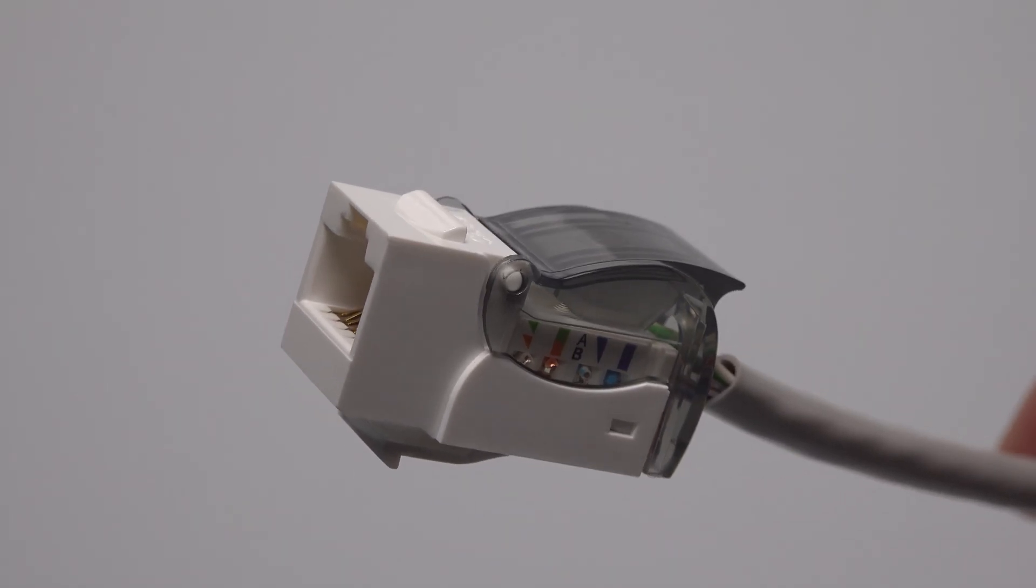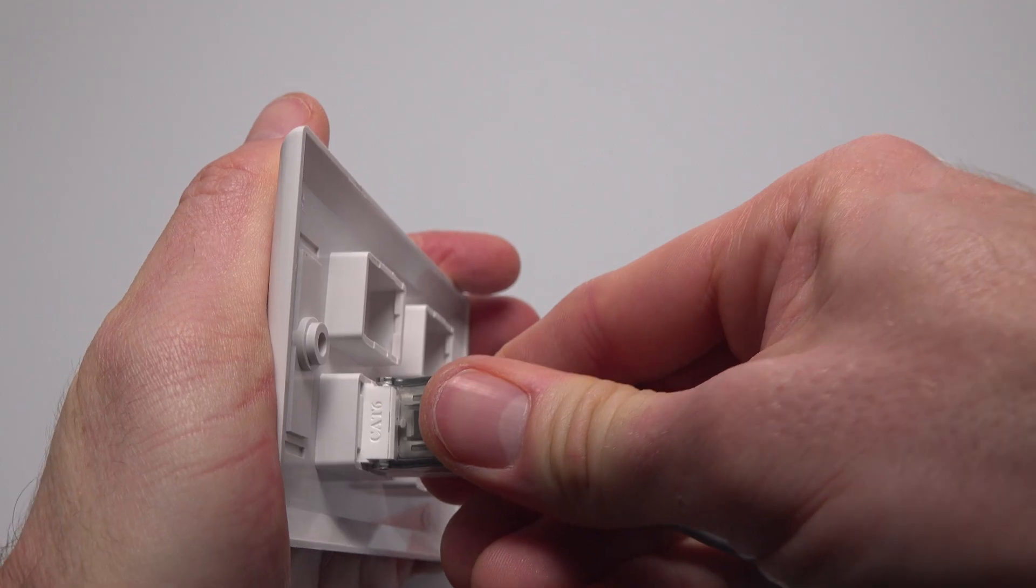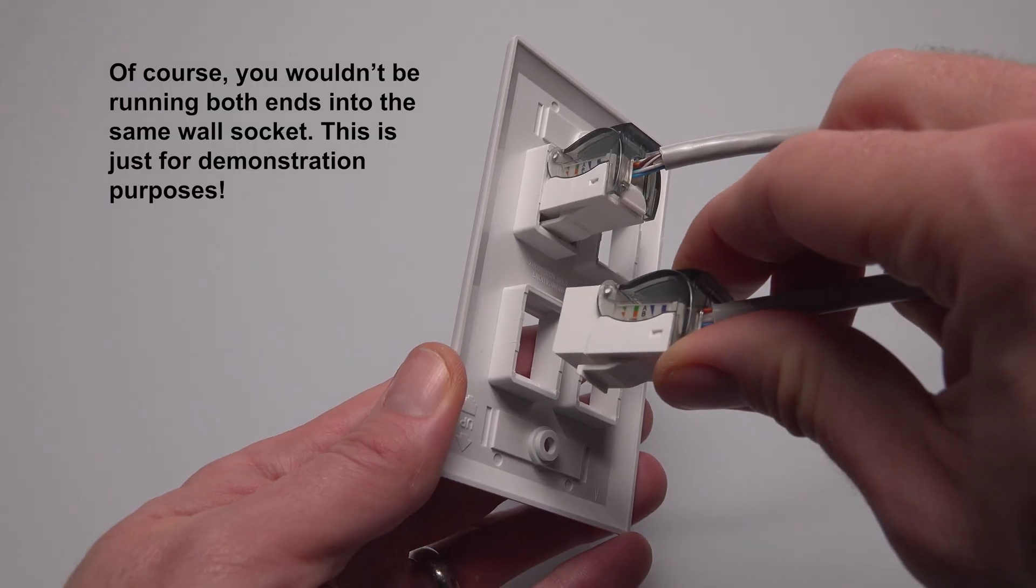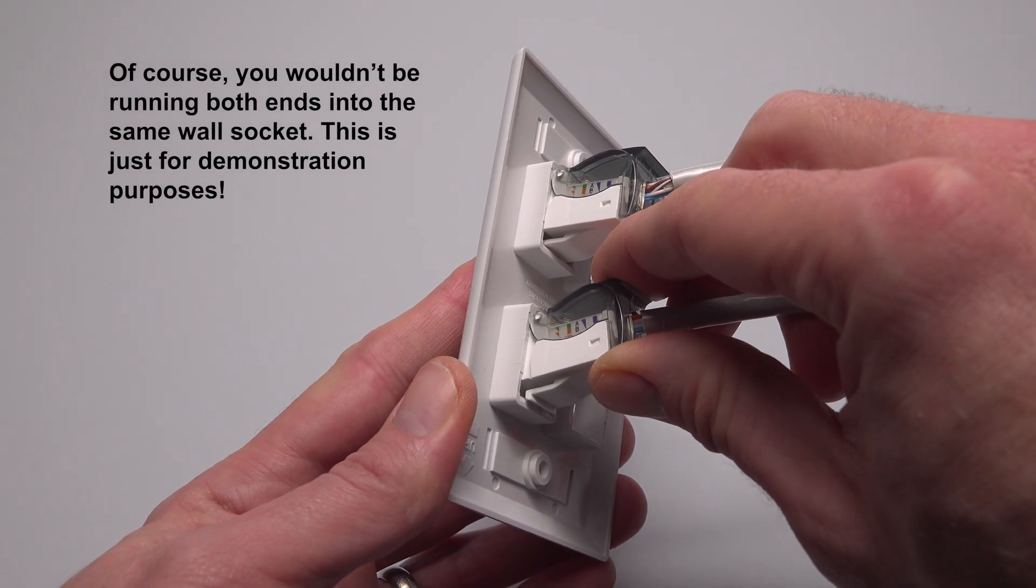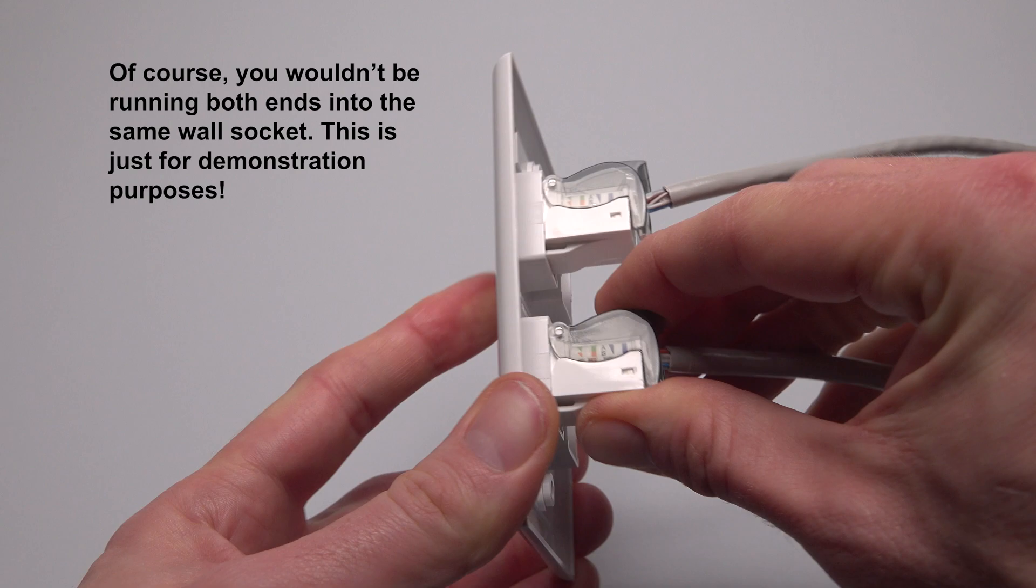It really is that simple. You can now clip the keystone jack into your wall plate or patch panel and then do exactly the same thing on the other end of the cable.